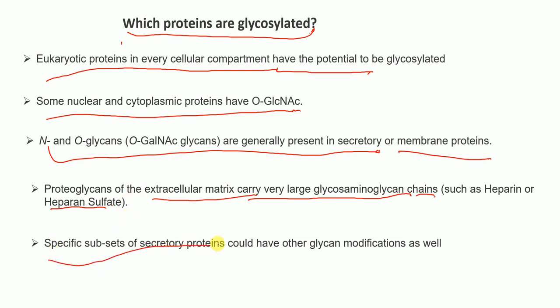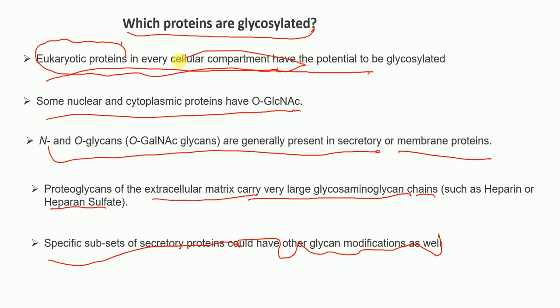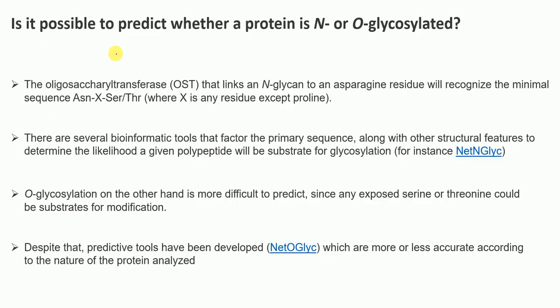Specific subsets of secretory proteins can also carry additional glycan modifications. In summary, every protein in the eukaryotic cell has the potential to be glycosylated.